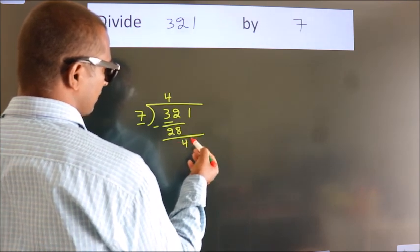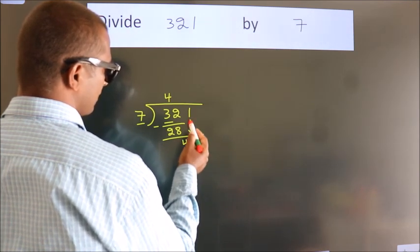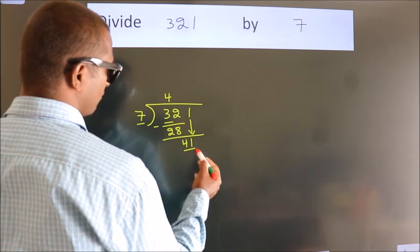After this, bring down the beside number. So 1 down, giving us 41.